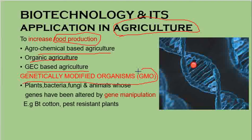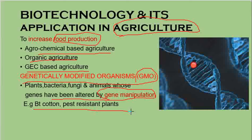A genetically modified organism (GMO) is a plant, bacterium, fungus, or animal whose genes have been altered by gene manipulation. We control and use the gene for a useful purpose and our benefit. An example of a GMO is Bt cotton — a pest-resistant plant.